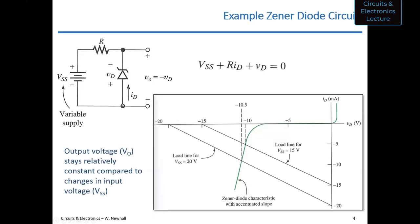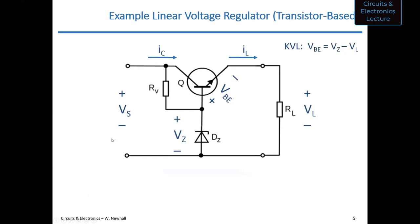Now let's look at using this sub-circuit in a larger voltage regulator circuit — specifically, how you might build a linear voltage regulator using a transistor as the active device that controls current. Suppose you have a source voltage on the left that may vary, and a load resistor on the right whose current demands may change — for example, turning a light on or off. You want the load voltage across that resistor to remain constant.